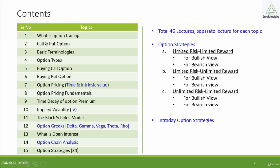Basically, option strategies are categorized into three main categories based on risk and reward: limited risk with limited reward, limited risk but unlimited reward, and unlimited risk but limited reward. So all our strategies fit into these three basic categories, and based on each trader's appetite for risk and reward, he can select the appropriate trade.